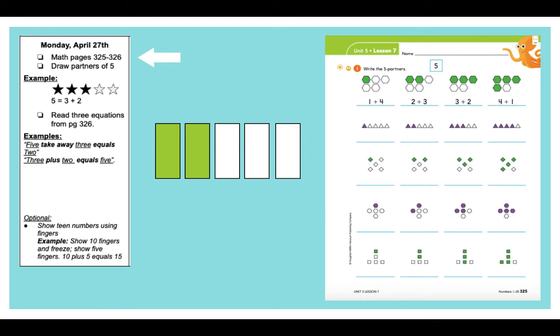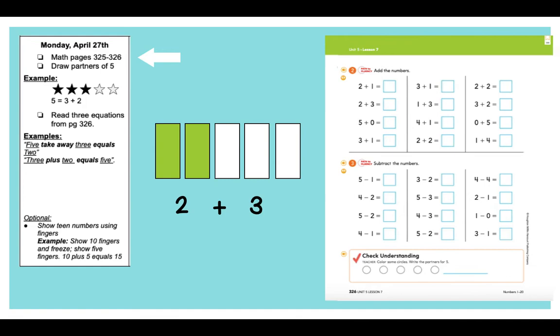So let's take a look at this example here. We're writing the five partners. Do you see how all of the shapes are the same, but some of them are different colors? Let's do this example together. So I have two green rectangles and I have three white rectangles. So my partners to make five, because there's five rectangles all together, is two plus three. So I would write that on the line. I'm going to count the colored shapes plus the white shapes. So do you see all on the top line? They have those examples already for you. There's one green hexagon plus four white hexagons. So count the colored shapes plus the white shapes.